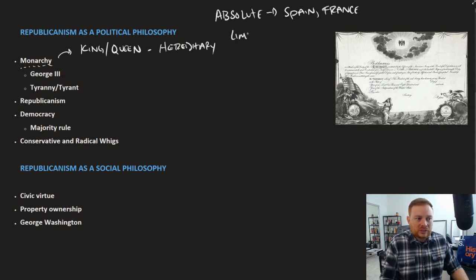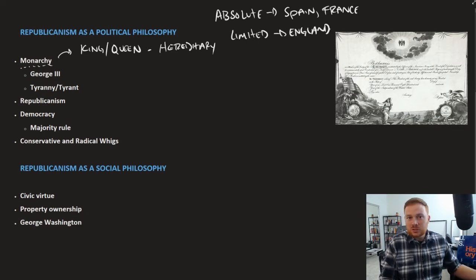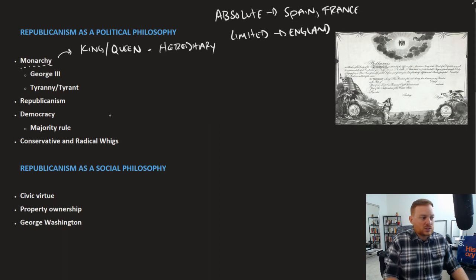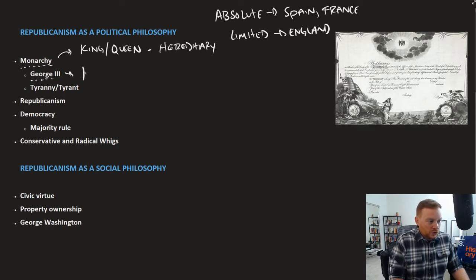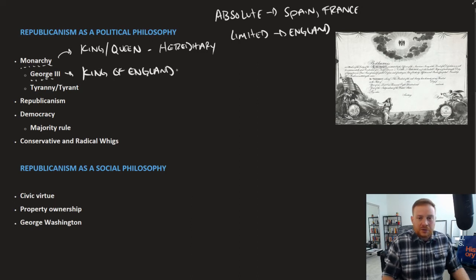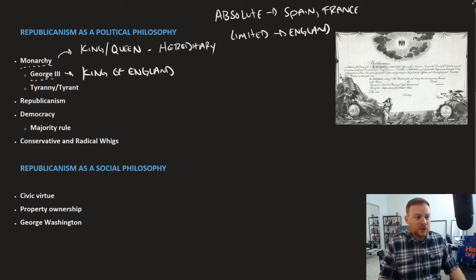Absolute monarchy was the case in places like Spain and France. But there were also monarchs that were limited in their power, which was actually the case in England. The English king did not have absolute rule — there was still a British parliament that could and did overrule the king. The king of England at the time was George III, who the colonists had more or less protested against and broken away from.